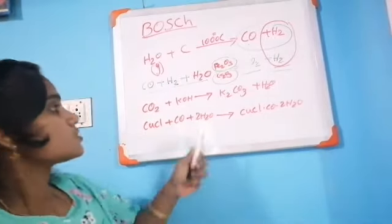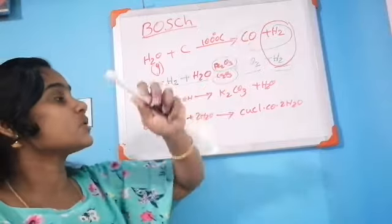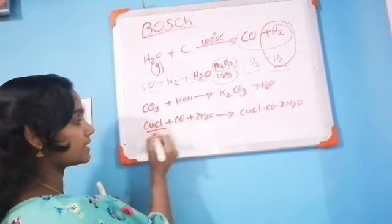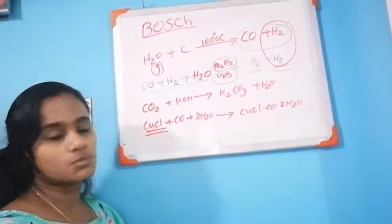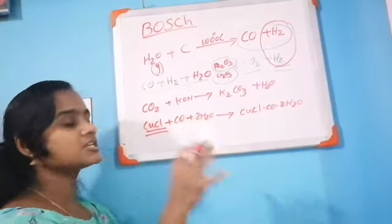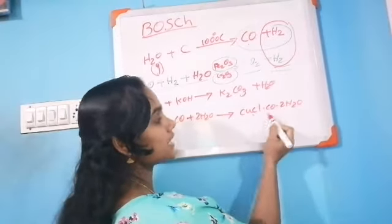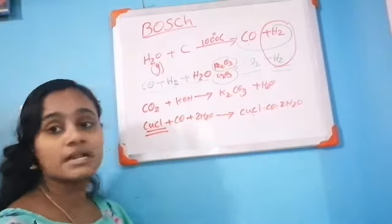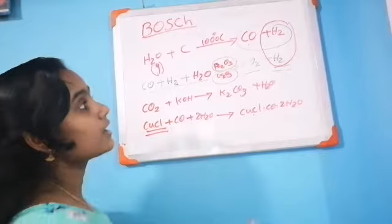Next, the remaining carbon monoxide is passed through ammoniacal cuprous chloride — CuCl. The carbon monoxide reacts with CuCl and water to form an addition product: CuCl·CO·2H₂O. This dot compound can be separated easily, and we then collect the pure hydrogen gas.